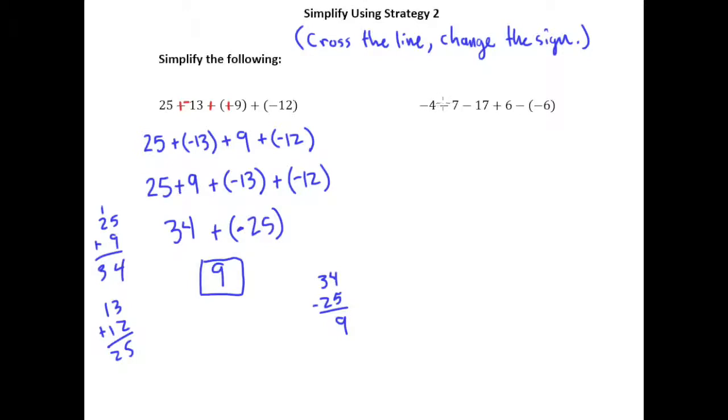This is definitely a minus sign, though, so I'm going to cross the line, change the sign. Same thing here, minus sign, so I will cross the line, I will change the sign. The plus 6 is exactly how I want it. I want everything to be plus, so I don't do anything to that. And then finally, I'm going to cross the line, change the sign here.